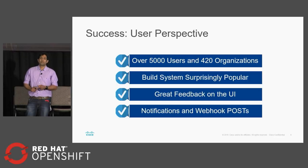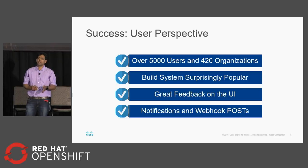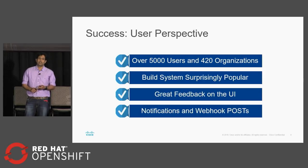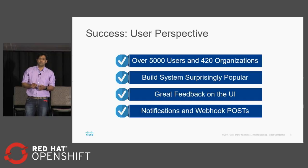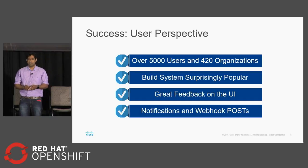We use a lot of notification webhooks. Whenever you push an image, the notification system can alert you — if that image has any vulnerabilities, you can get an email or a Slack message.